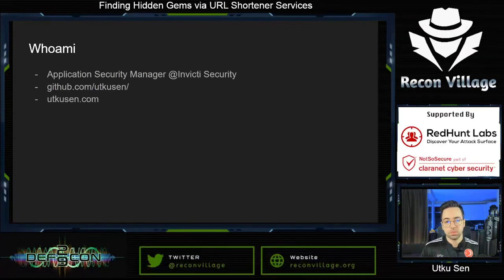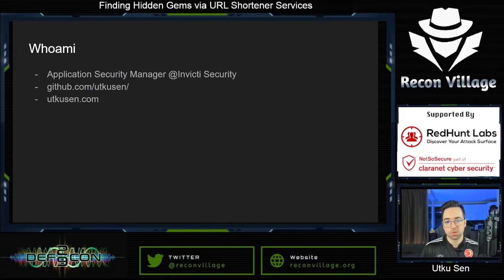Let me introduce myself. I'm Utku Shen. I'm working at Invicta Security as Application Security Manager. I'm writing various security tools — you can check them on my GitHub account. Also, I'm writing blogs about security and you can visit my website to read them.